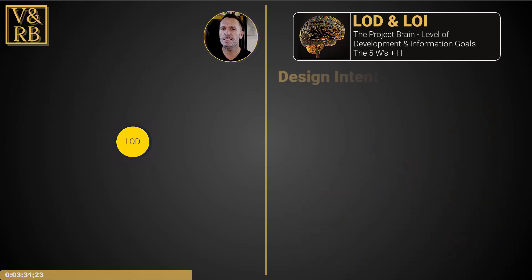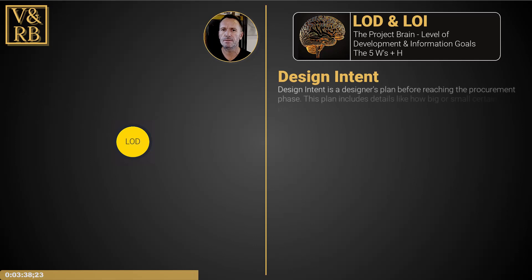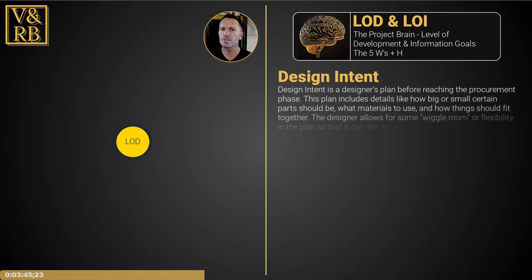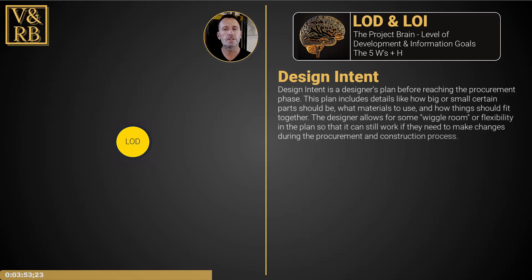Now let's take a look at design intent. Simply put, the design intent is a designer's plan before reaching the procurement phase. This plan includes details like how big or small certain parts should be, what materials to use, and how things should fit together. The designer allows for some wiggle room or flexibility in the plan so that it can still work if changes are needed during the procurement and construction process.